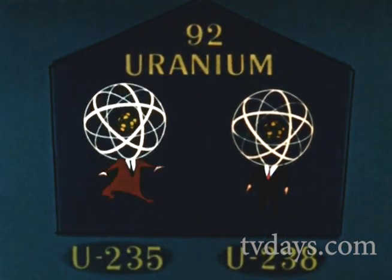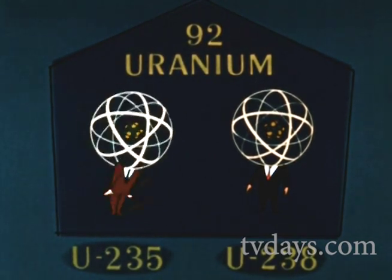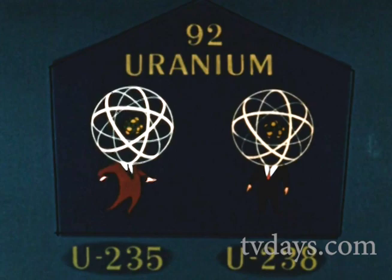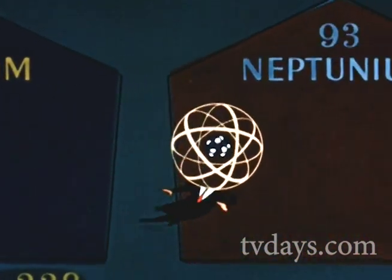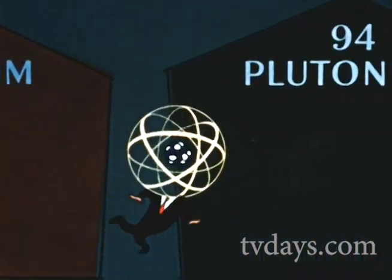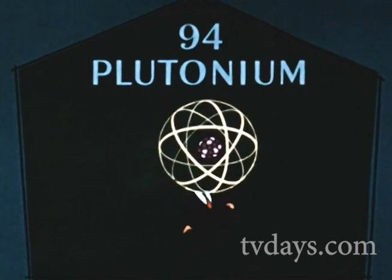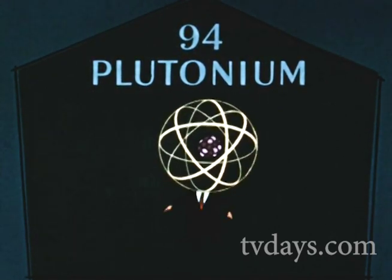But others of those slowed down neutrons hit U-238 atoms, and here's what happens. Remember, we said that U-238 wouldn't support a chain reaction. However, it will capture neutrons from U-235 fission and start a process which converts the U-238, first to neptunium, then to plutonium, and plutonium will fission in chain reaction. Thus, the reactor itself is a source of atomic fuel.